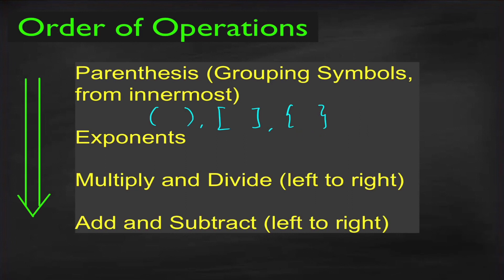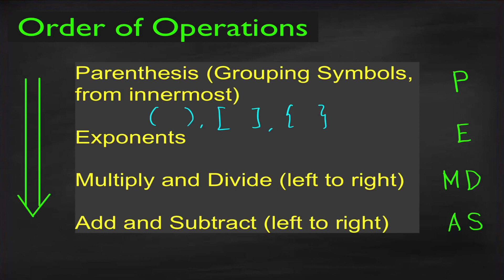How do we perform the operations? First we do the exponents, then followed by multiplication and division from left to right, and then followed by addition and subtraction from left to right. To remember this order of operations, we use the word PEMDAS. It is better to write PEMDAS vertically so we won't forget that multiplication and division are done from left to right, and same with addition and subtraction.